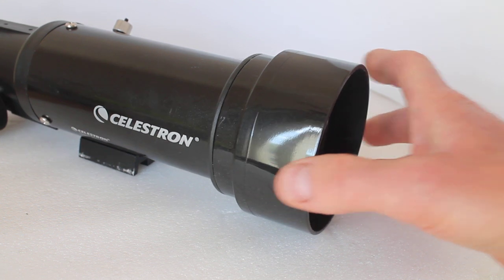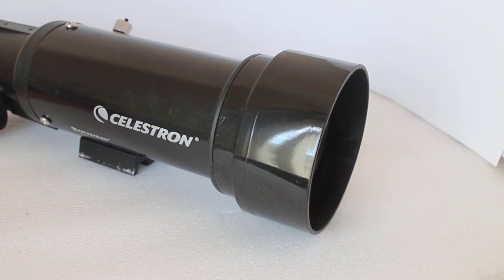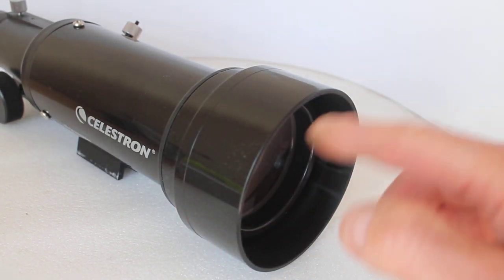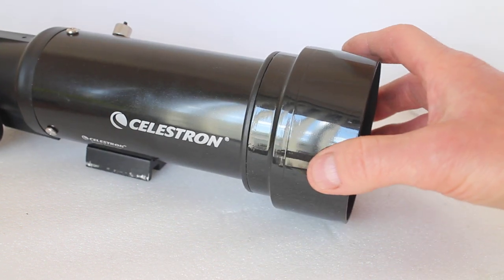So what we have here is a Celestron Travel Scope 70, and like many open tube scopes, it's not a sealed unit. So as well as on the outside of the lens, you may get dust on the inside.